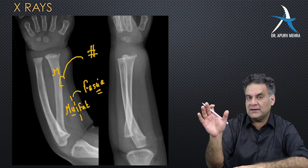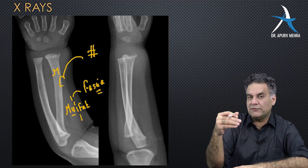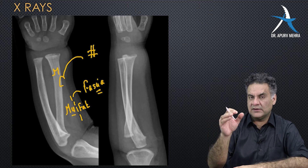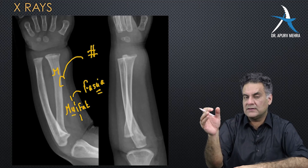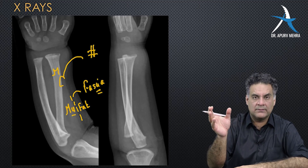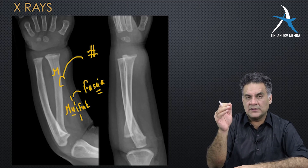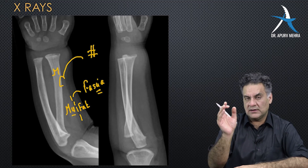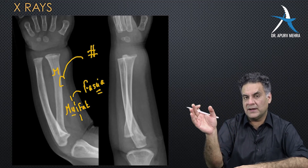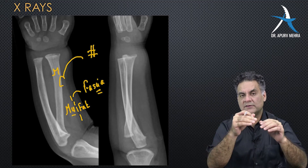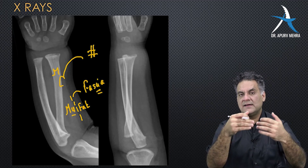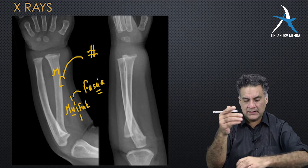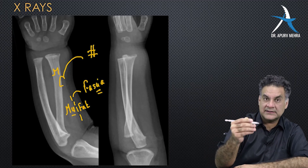Whenever there is a swelling in the limb, like infections, these soft tissue planes will merge into each other. This loss of soft tissue plane takes about 24 hours. So in the first 24 hours, X-rays are normal; after more than 24 hours, there is loss of soft tissue plane — one of the earliest X-ray features of osteomyelitis.